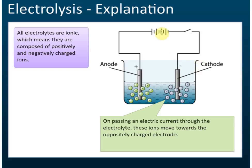When electricity passes through this electrolyte, on passing an electric current through the electrolyte, these ions move towards the oppositely charged electrode. The negative ions in this electrolyte will move to the positive electrode, and the positive ions will go to the negative electrode.